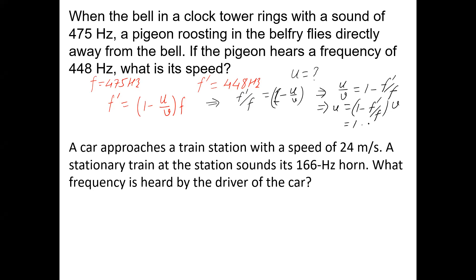So 1 is 1, f dash is 448, which is less frequency heard by the pigeon when it is moving away from it, divided by 475, which is source frequency, times v, the velocity of sound, which in this case at room temperature is about 343 meter per second. So if I solve this equation using calculator, I'll get roughly about 19.5 meter per second. So the pigeon's speed is 19.5 meter per second.